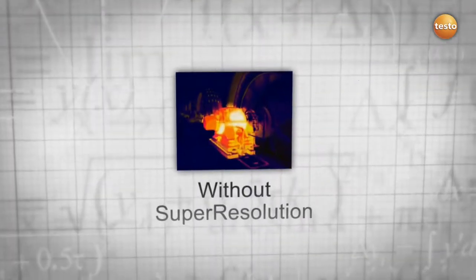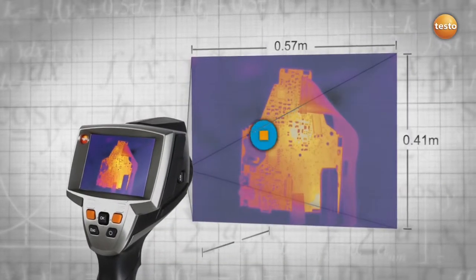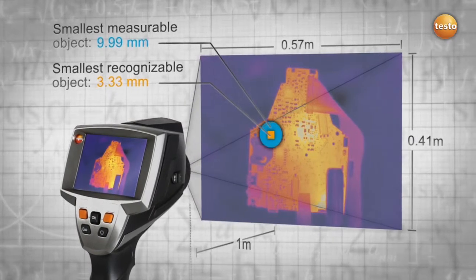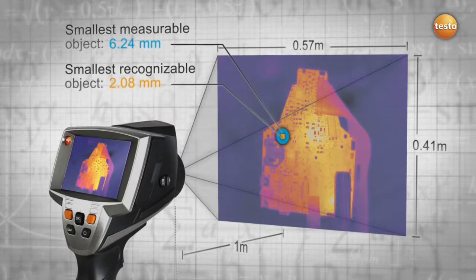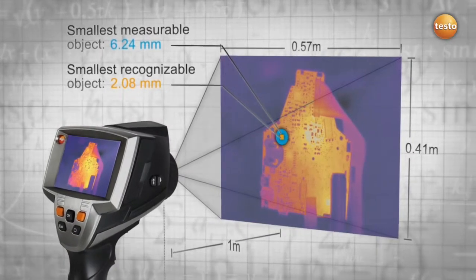The super-resolution technology leads to more meaningful thermal images. But that's not all. As your smallest measurable object decreases in size, you are still able to detect more details while maintaining the same distance to your measured object.